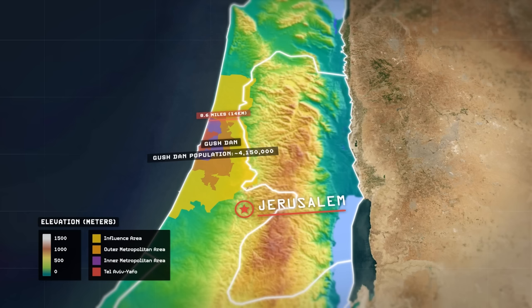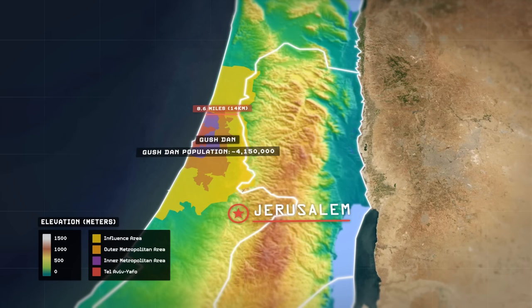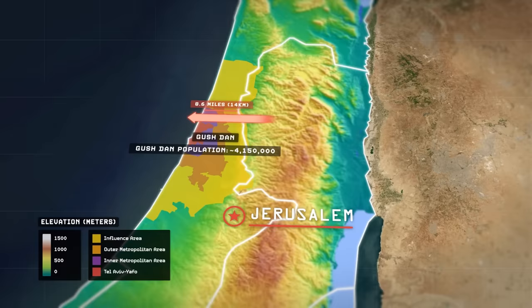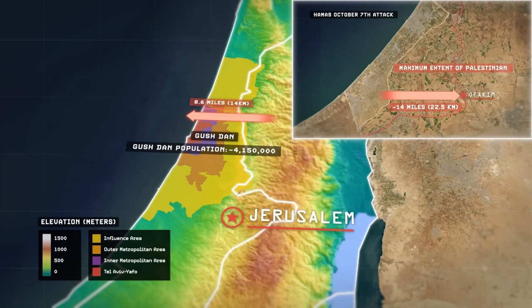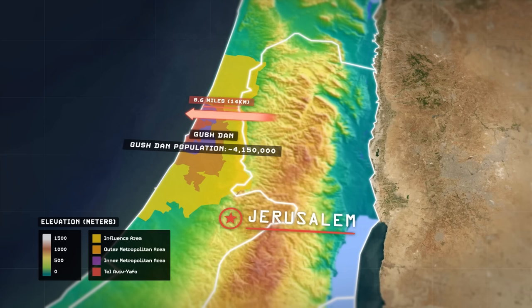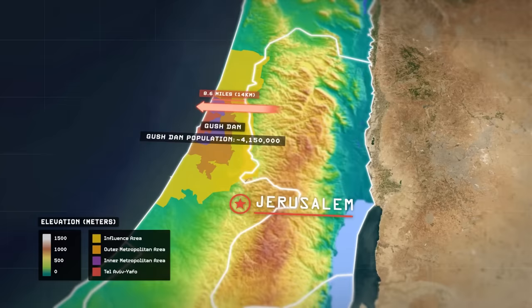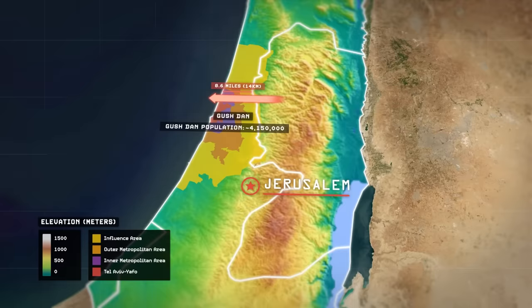If the West Bank was fully under the control of an organization hostile to Israel, such as Hamas, it would only take an advance of about nine miles for an invasion force to completely sever Israel into two separate geographic halves. For reference, during the October 7th attack, Hamas was able to punch into Israel nearly 14 miles deep at their furthest advance. Had the same thing happened out of the West Bank, Israel could have been split into two while militants attacked the downtown core of Tel Aviv itself. In order to increase their strategic depth and deny an enemy use of the high ground facing the coastal plain, Israel has long considered their continued control — or at least influence — over the West Bank to be a geographically vital strategy to maintain, even if the rest of the world considers it illegal.